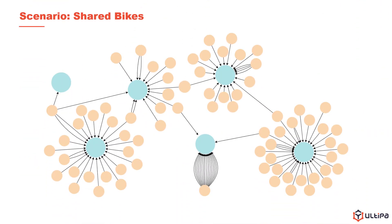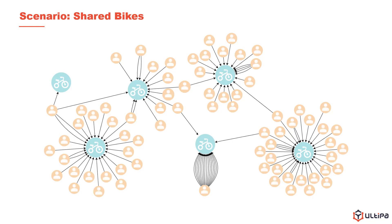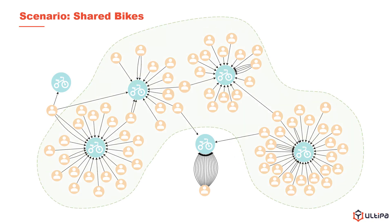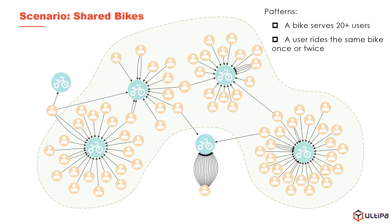In this graph, the green nodes represent the bicycles provided by a shared service company. The yellow nodes represent users that rode these bikes in the past five days. Each arrow, which we call an edge, indicates a ride on a bike by a user. By intuition, we can distinguish the majority of users and bikes from the graph, as most bikes serve dozens of users, and most users ride the same bike only once or twice.